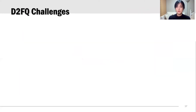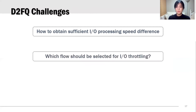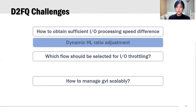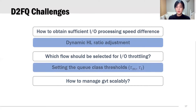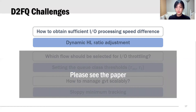With this basic idea, G2FQ needs to address the following challenges: first, how to obtain sufficient I/O processing speed difference from NVMe WRR; second, which flow should be selected for I/O throttling; and finally, how to manage GVT scalably. For the first issue, we introduce dynamic HL ratio adjustment. For the second, we carefully set the threshold value for the queue class selection policy. For the last, we introduce a sloppy minimum tracking method. Due to time limitations, I'm going to talk about the dynamic HL ratio adjustment only.